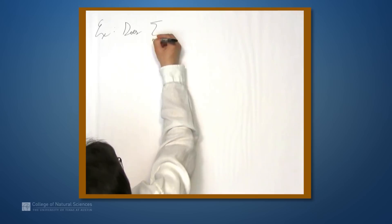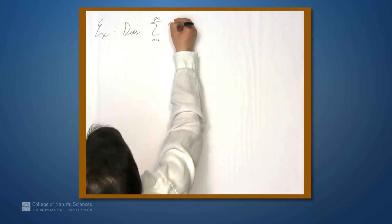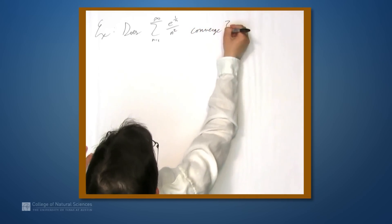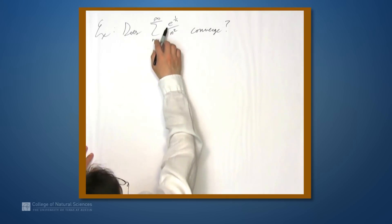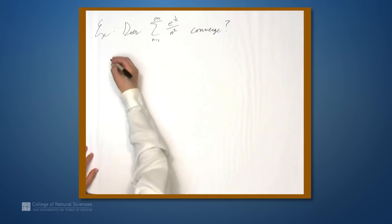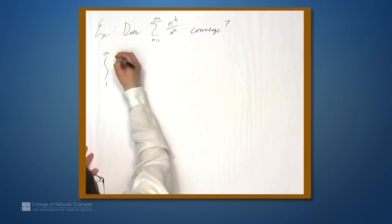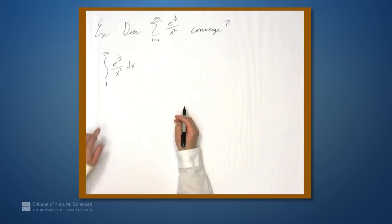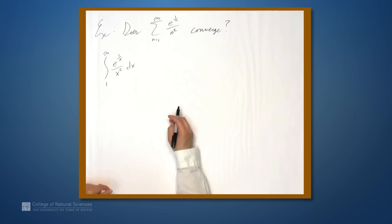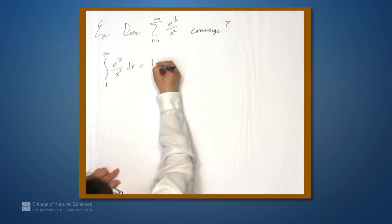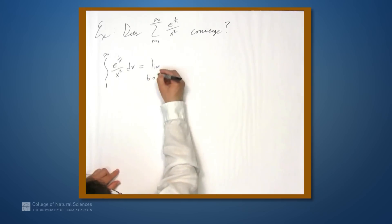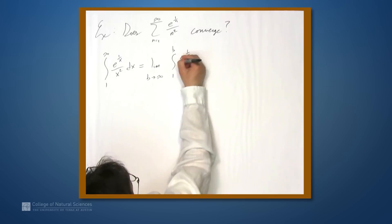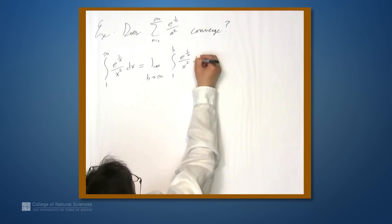Let's take a look at another example. Does the series from n equals 1 to infinity of e to the 1 over n, all over n squared, converge? We have the associated function e to the 1 over x over x squared, which is positive, continuous, and decreasing. So we'll look at the improper integral from 1 to infinity of e to the 1 over x over x squared dx, which by definition equals the limit as b goes to infinity of the integral from 1 to b of e to the 1 over x over x squared dx.